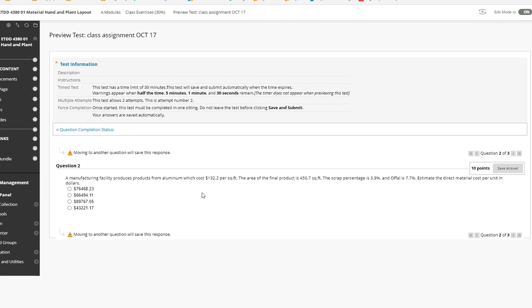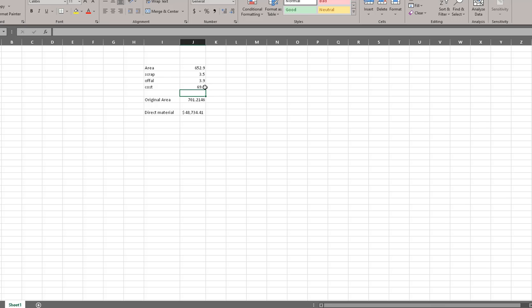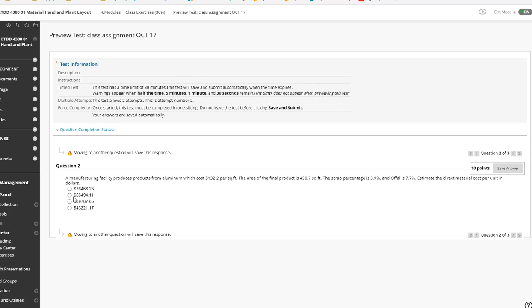And similarly you can work out for the rest of the questions which is 450.7 square feet. Scrap is 3.9%. Offal is 7.7%. Cost is $132.2. So $66 point this much.